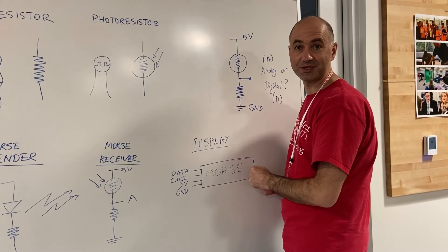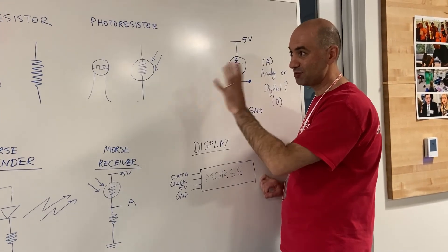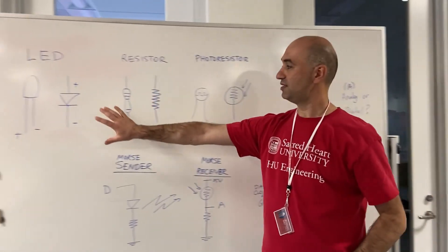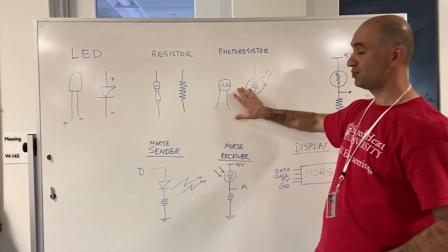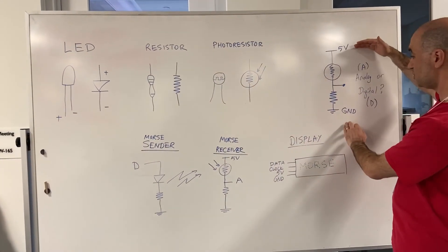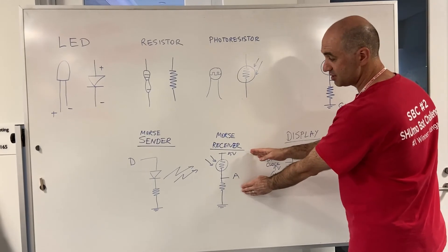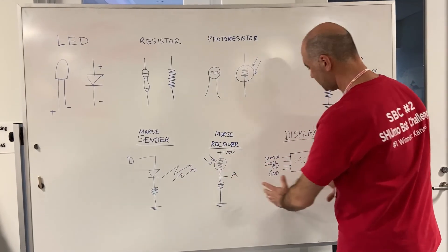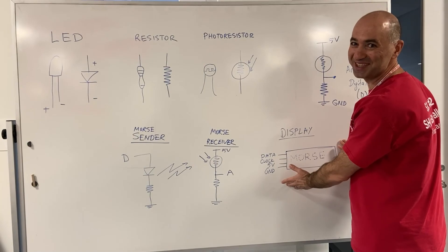This is all our morse code sender and receiver: our LED and resistor, photoresistor, the voltage divider which is the same thing as the receiver, sender, receiver, and our display. All right, let's keep building.